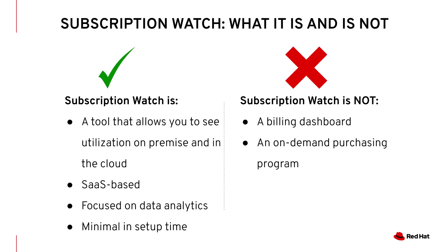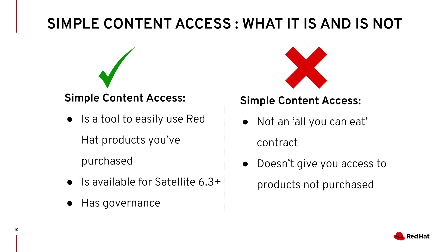Because the subscription space can be somewhat complex, we want to do some disambiguation about what Subscription Watch is and what it isn't. Subscription Watch at its core is a cloud-based tool that lets you see your utilization of both on-premise and off-premise workloads. It's focused on data analytics and setup — if you're leveraging Insights, you can use Subscription Watch out of the box; if you're using Satellite, just a simple plugin to get you up and running. What Subscription Watch is not: it's not a billing dashboard and has no intent of generating invoices, and it is also not an on-demand purchasing program. Simple Content Access is a tool to let you use what you've already purchased — it doesn't give you access to things you haven't purchased. It's currently available for Satellite version 6.3 and newer, and we're looking to make it available for RHSM later this year.